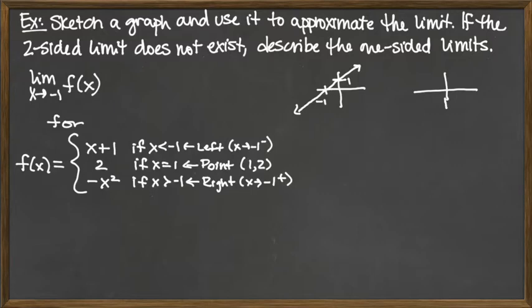The bottom piece, y equals negative x squared — well, y equals x squared is the standard upward-opening parabola. The negative out front is the reflection that makes it open downward. That would be the entire graph of y equals negative x squared. I graph the entire thing first so I can then take just the part I need.